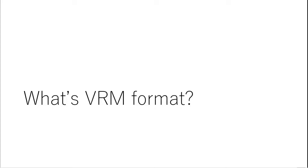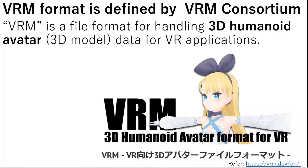What's VRM format? VRM format is defined by a consortium. The official definition is: VRM is a file format for handling 3D humanoid avatar data for VR applications. For example, picture formats are JPEG, PNG, and BMP. Music formats are WAV, MP3, and AAC. In the same way, the 3D model format is VRM. So VRM is a file format — it's very simple.